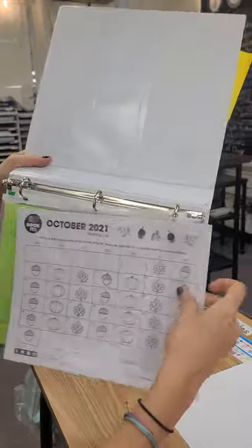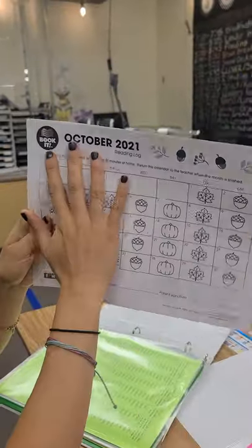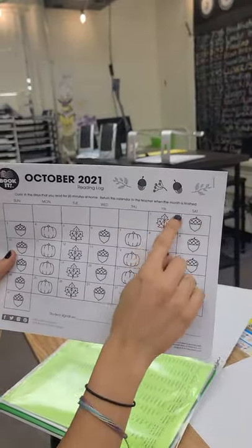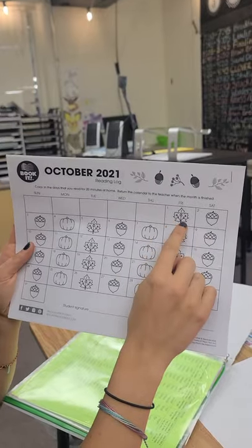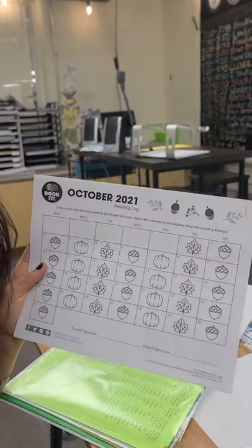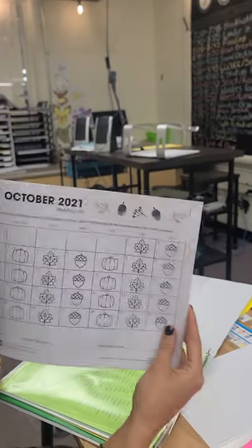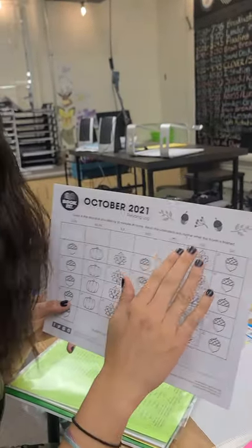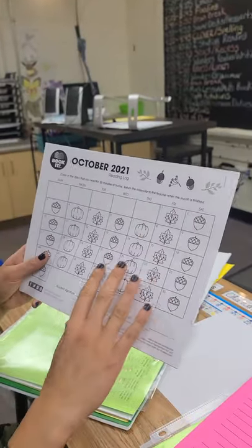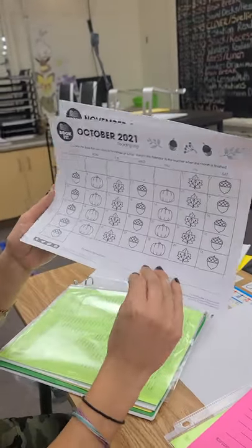So I went ahead and stapled all of the reading logs. In October, we'll start October. When kids read 20 minutes, have them fill in just one of the pictures. If you only read 10 minutes, maybe even just color half of the picture. If your student has a hard time reading, read to them. You can get online, you can do audio books. Audio books are always good.